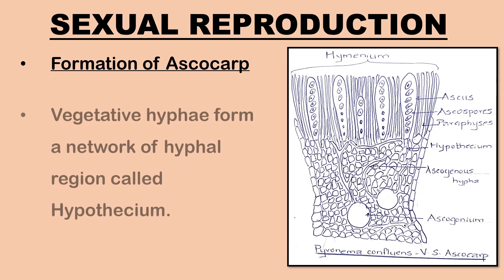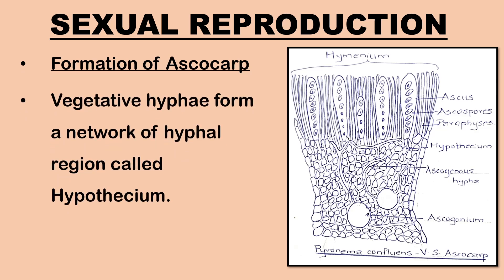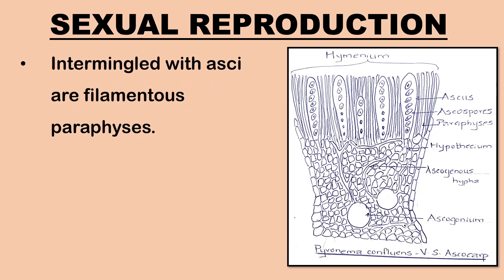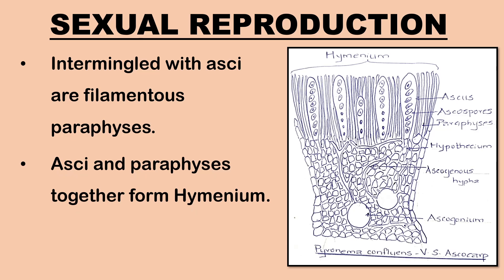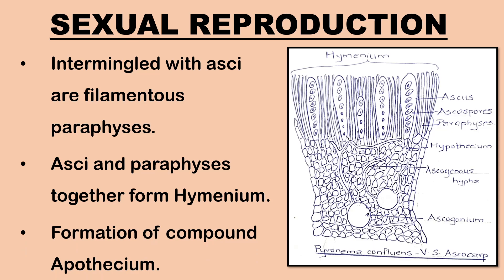Let us understand the formation of the ascocarp. A network of inter-crossing hyphae is formed by the vegetative hyphae; this region is known as the hypothecium. Intermingled with the asci are unicellular filamentous paraphyses which run parallel to each other. The paraphyses and the asci together form a structure known as the hymenium. Peridium or rim is absent. The mature fructification is a dish-shaped ascocarp called the apothecium. As a number of ascocarps are produced very close to one another, they become enclosed in a common sheath to form a compound apothecium.